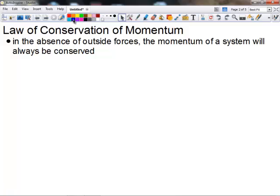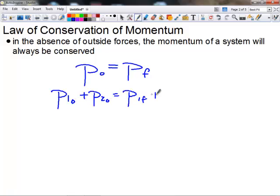The way we represent that is by just saying that P initial of the system equals P final. P initial and P final refer to the total momentum of the system. If you want to imagine a sigma out in front of these, that may be a good idea. If we're dealing with multiple objects, we would say P1₀ plus P2₀ equals P1f plus P2f, where P1 and P2 are just the momentum of different objects.